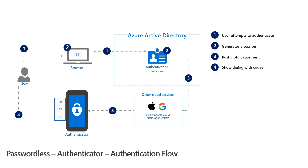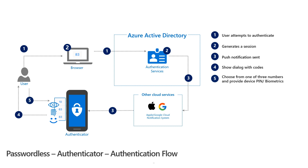The user is then presented with three numbers that they must match with the number shown on the browser. The user could also choose to deny the request, which terminates the session and thus the authentication. When the user selects the code displayed in the authenticator, they will then be prompted for the device PIN or biometric gesture. The device PIN or biometric gesture is used to access the private key on the device.